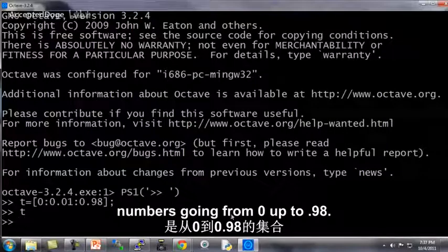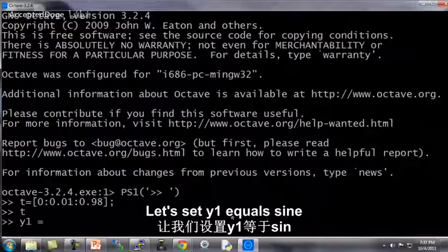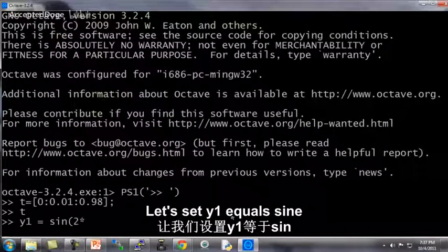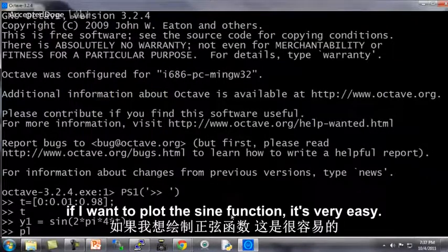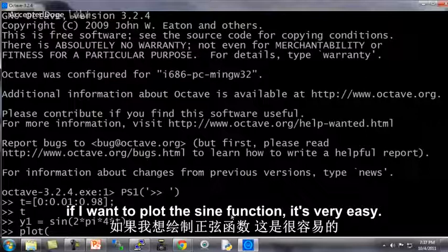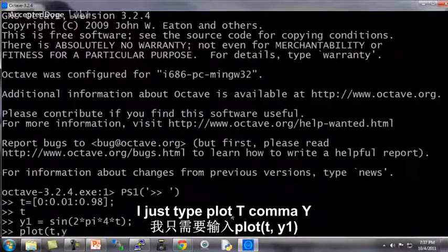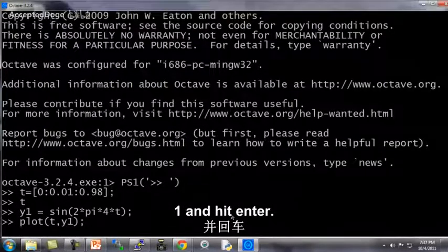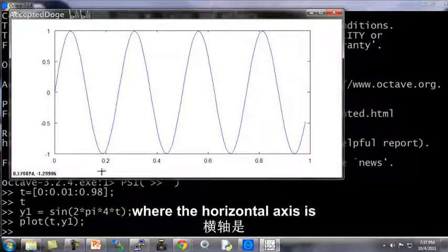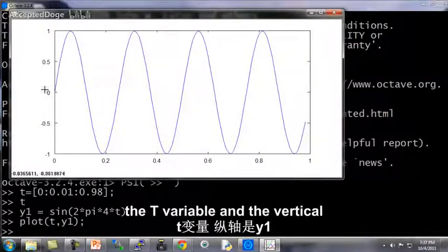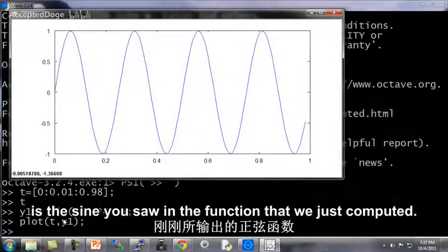Here's t, set of numbers going from 0 up to 0.98. Let's set y1 equals sine of 2 pi 4t. And if I want to plot the sine function, it's very easy. I just type plot t comma y1 and hit enter. And up comes this plot where the horizontal axis is the t variable and the vertical axis is y1, which is the sinusoid function that we just computed.